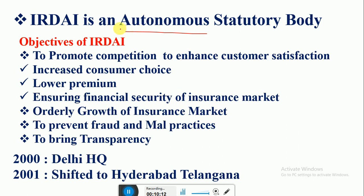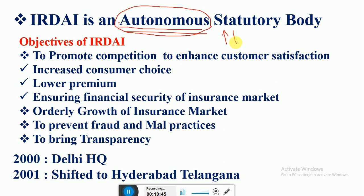Autonomous body means it is fully independent — no one can pressurize it. It can frame its own rules and regulations, appoint capable persons to look into its affairs, and from time to time frame policies and qualifications for actuaries, intermediaries, and surveyors. IRDAI may act on its own.